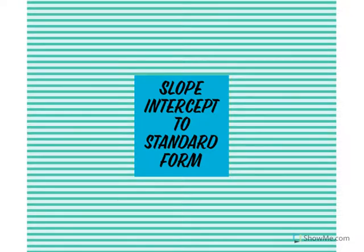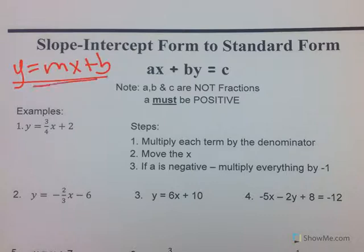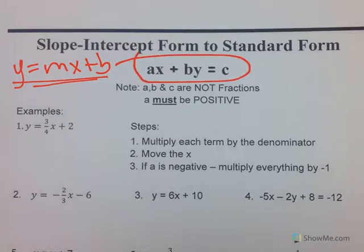When you put it in slope-intercept to standard form — slope-intercept looks like y equals mx plus b, and then you're going to try to put it in standard form, which is ax plus by equals c.